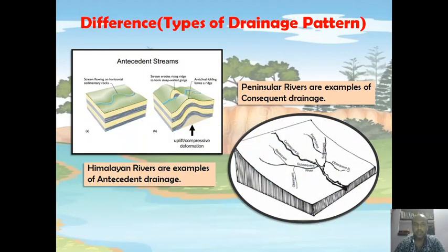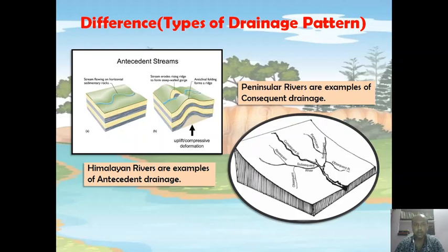I will now discuss the differences between the Himalayan rivers and the Peninsular rivers. Himalayan rivers are an example of antecedent drainage, because these rivers maintained their original flow direction and course despite changes in the landform. If you go through this diagram, you will see that initially there is a stream flowing on horizontal sedimentary rocks. These rocks underwent upliftment due to folding or compression, resulting in the formation of a ridge. Despite the ridge in the flow path, the river maintained its course by cutting through it, forming a steep-walled gorge.